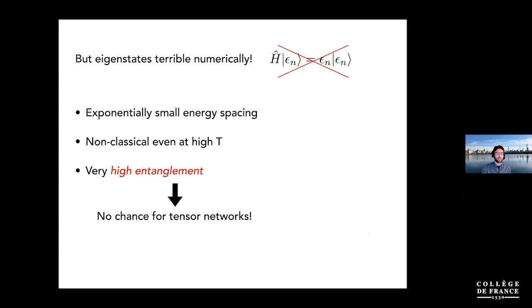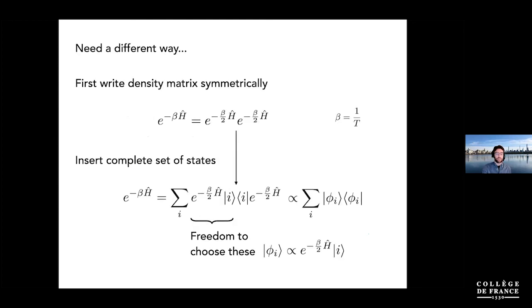So from this point of view, tensor networks seem like a niche topic — great for ground states in low dimensions, but no hope at finite temperature, and you should just switch to something else. But it turns out you can be more creative. This was worked out by Steve White in 2009, who developed the beautiful METS algorithm. You can approach the finite temperature density matrix differently: write it as its square root times the square root — a symmetric pure state decomposition — and insert a complete resolution of the identity.